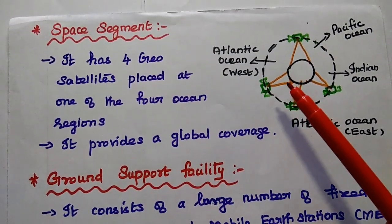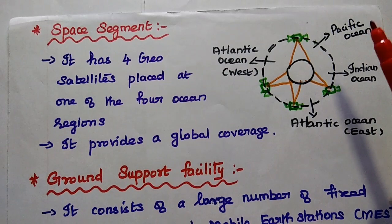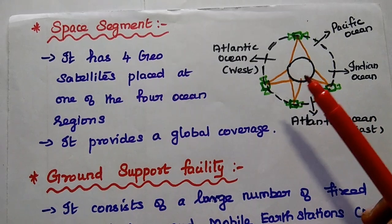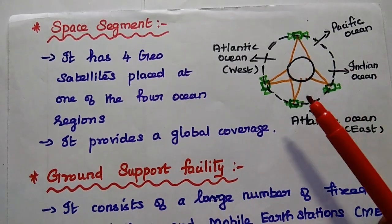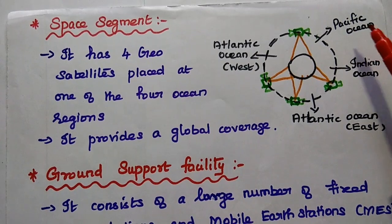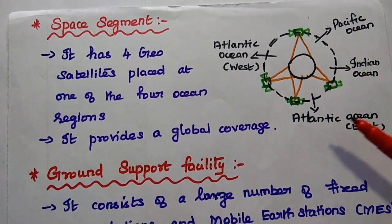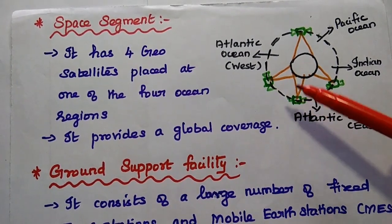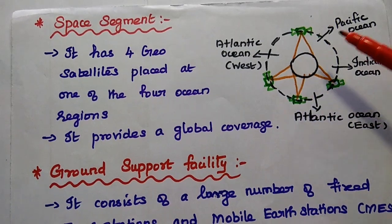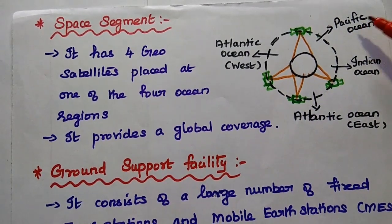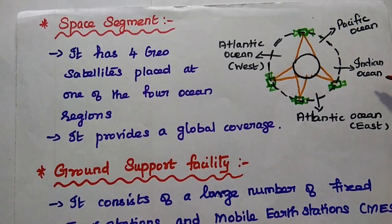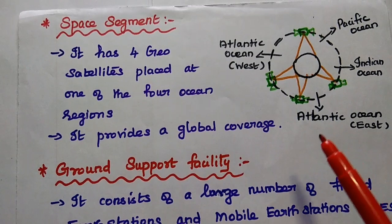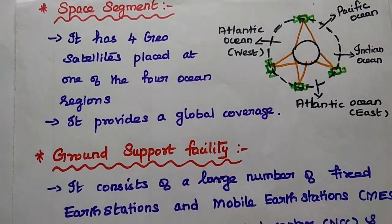In the space segment, there are 4 geostationary satellites, each placed over one of 4 ocean regions. The earth's ocean region is divided into: Pacific Ocean, Indian Ocean, Atlantic Ocean East region, and Atlantic Ocean West region. So there are 2 satellites for the Atlantic Ocean — East and West — one satellite over the Pacific Ocean, and another one over the Indian Ocean.